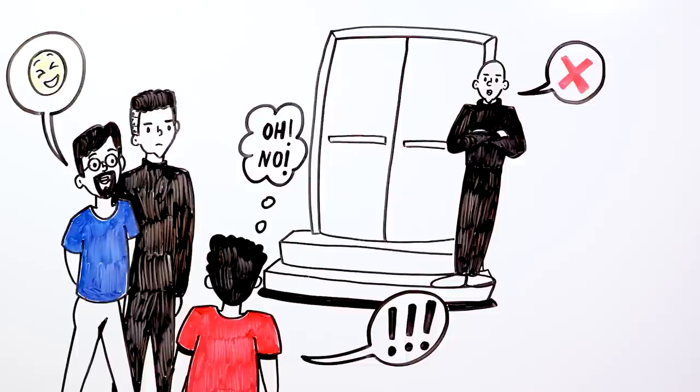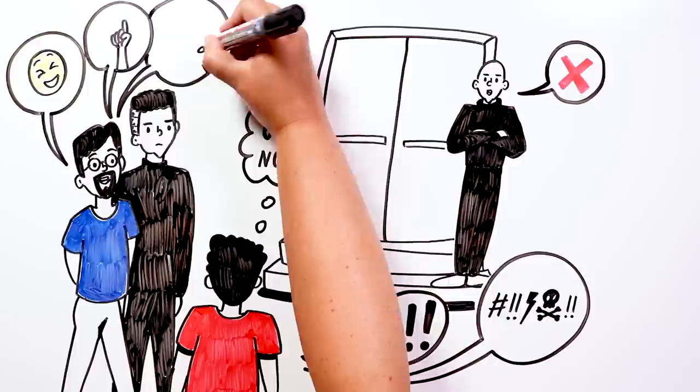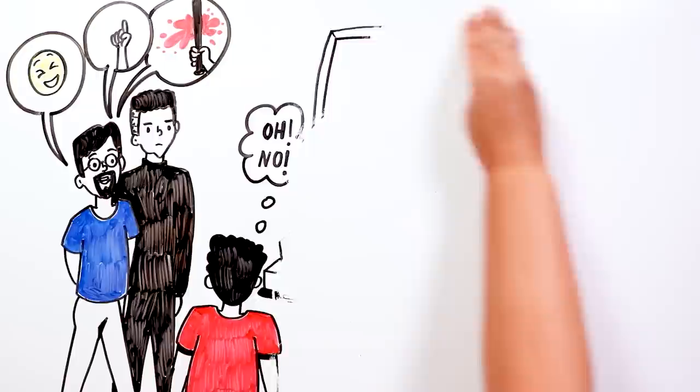Bob realized that the presenter had only told him this to keep him off the set and avoid a scandal on air. He lost control and began to insult him, but the presenter ordered his guards to take him away from there and threatened him with a severe beating if he dared to appear there again.